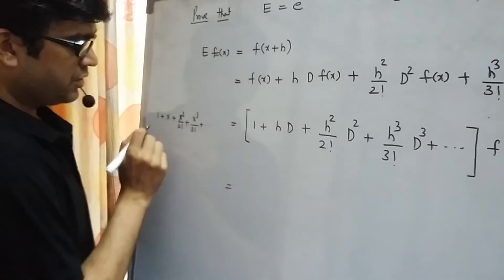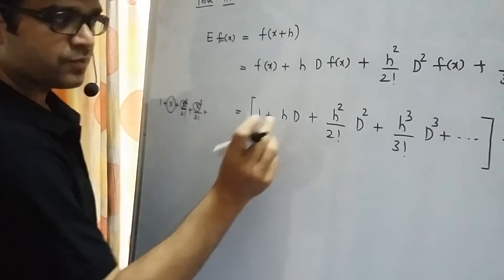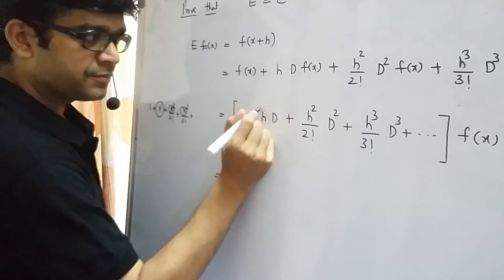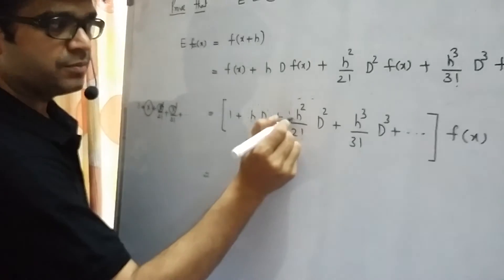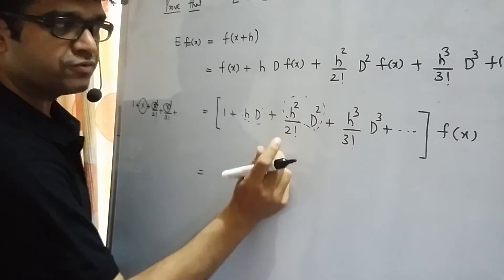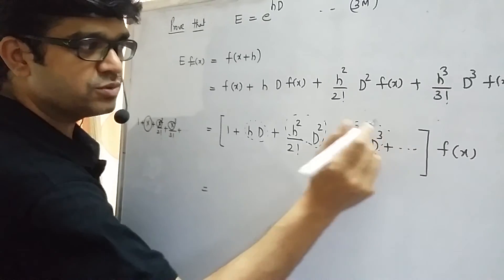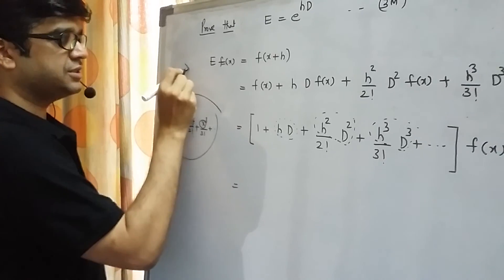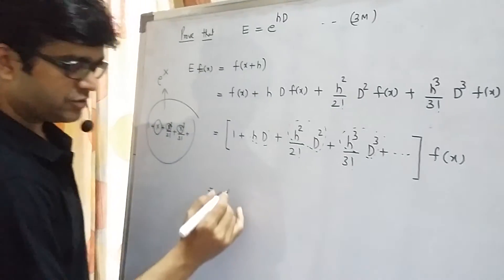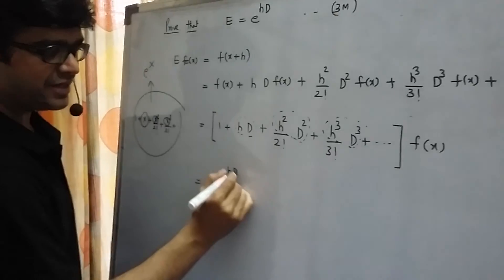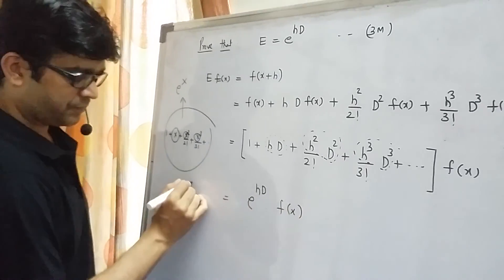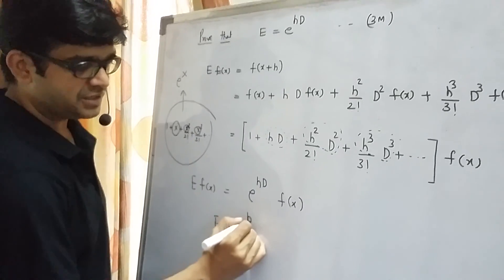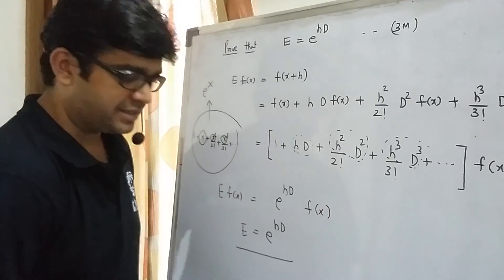This is like 1 plus x plus x square by 2 factorial, x cube by 3 factorial and which is nothing but the expansion of function E raise to x. So this particular thing is expansion of E raise to hd on f(x). Now we can divide throughout by f(x) and what we get equals to E raise to hd. That is the proof.